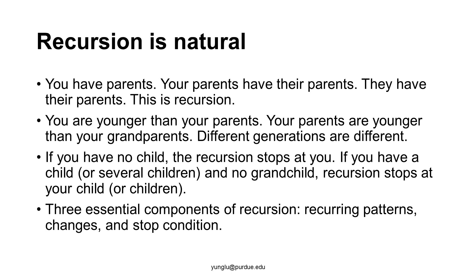Recursion is more than simply repeating things. Each generation is different — you are younger than your parents, and your parents are younger than your grandparents. Recursion has to stop somewhere: if you have no child, recursion stops at you. Recursion has three essential components: recurring patterns, changes, and a stop condition.